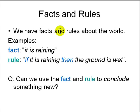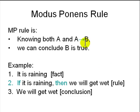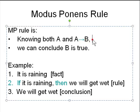For example, a simple fact could be: it is raining. And a rule could be: if it is raining, then the ground is wet. So can we use this fact and this rule to conclude something new? Yes, we can. If the condition is true, then the conclusion is also true — the ground should be wet. This rule is so old that it has a Latin name.